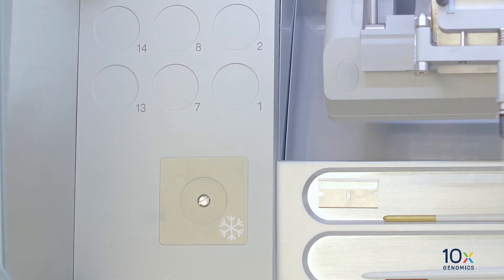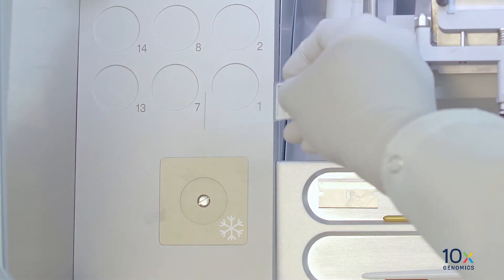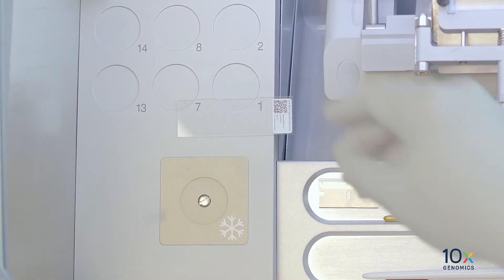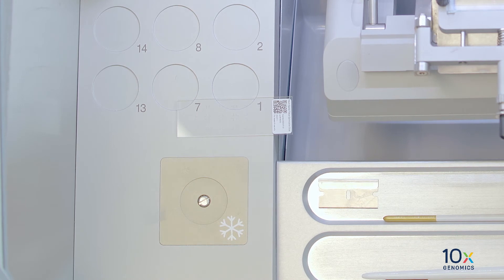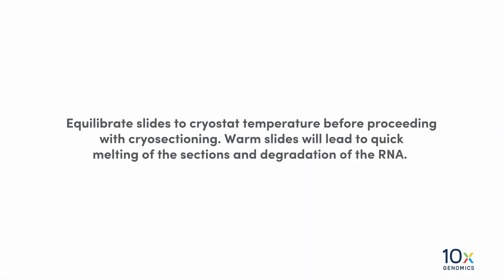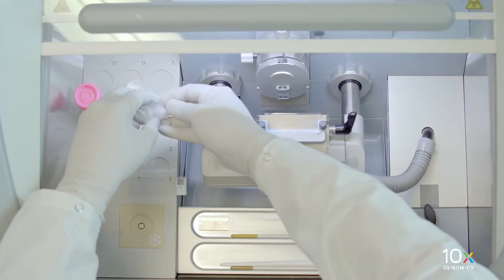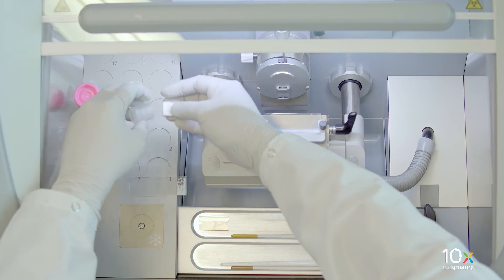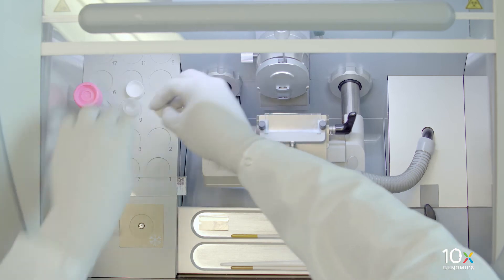We have the Visium slides, which have been cooled down to the cryostat chamber temperature for at least 30 minutes. Equilibrate slides to cryostat temperature before proceeding with cryo sectioning. Warm slides will lead to quick melting of the sections and degradation of the RNA.